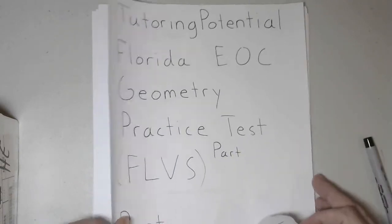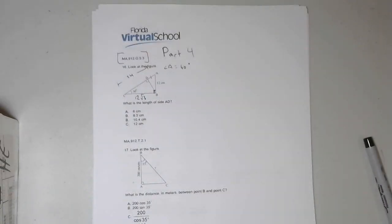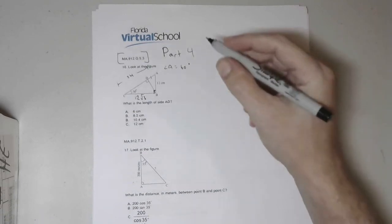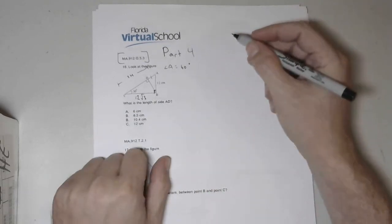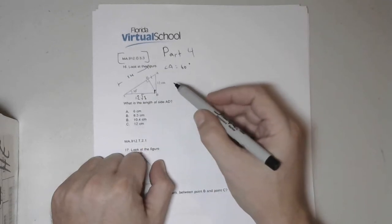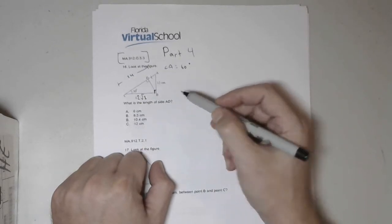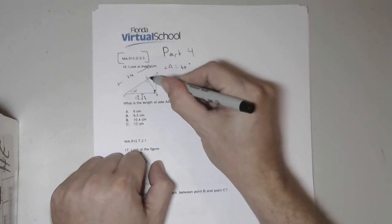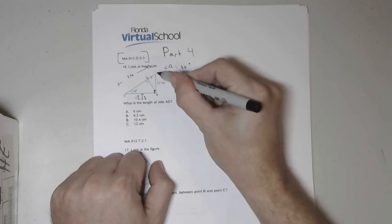We are starting today with number 16, which involves special right triangles — in this case the 30-60-90 right triangle. Number 16 wants the length of side AD, which is this right here.